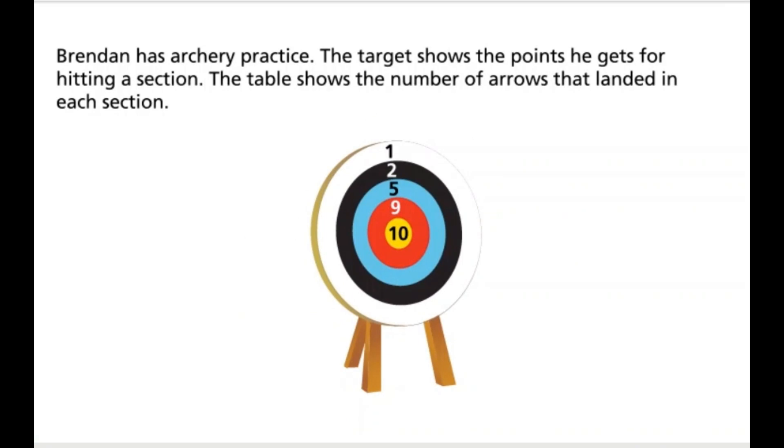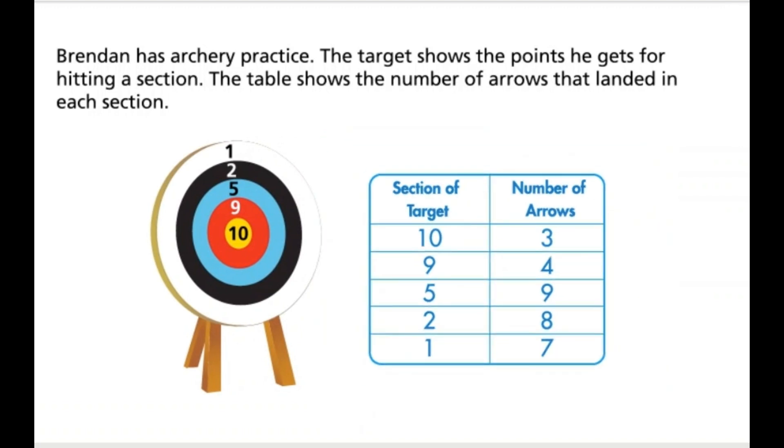Brendan has archery practice. The target shows the points he gets for hitting a section. The table shows the number of arrows that landed in each section.